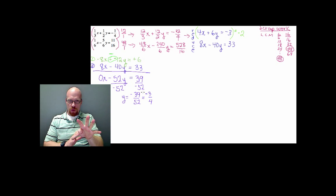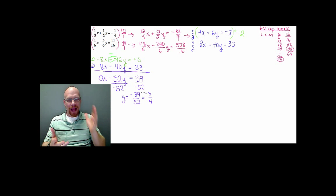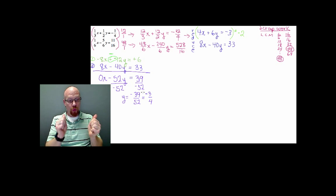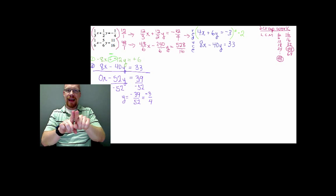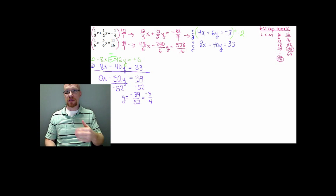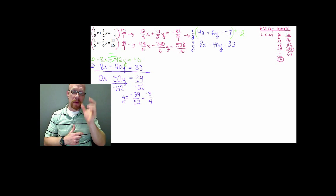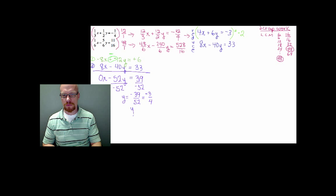That negative three-fourths for y needs to be substituted back into one of the equations above so we can solve for x. This time I will not use the LCD or LCM to get rid of the fractions — we're going to use them as they are. The first equation seems to be a better choice: one-third x plus one-half y equals negative one-fourth, with three-fourths as the answer for y. It seems manageable.